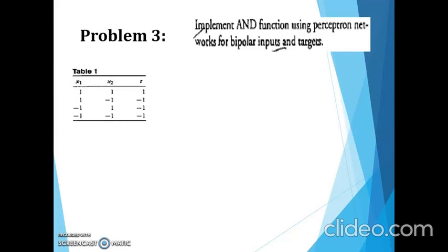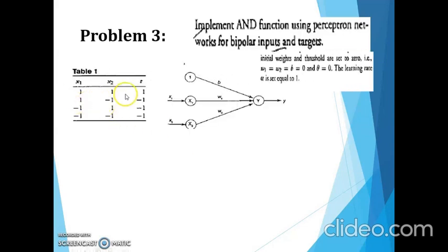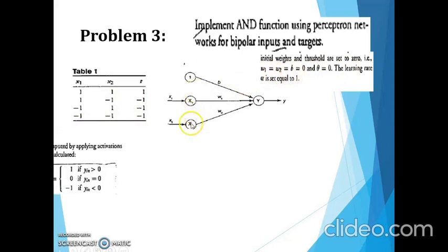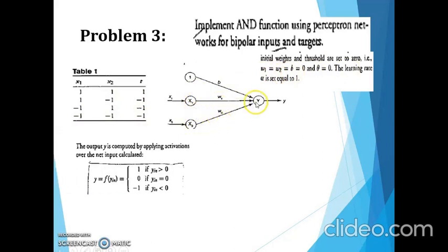Now we see the AND gate implementation using the perceptron neural network for bipolar input. AND truth table (bipolar): 1·1=1, 1·(-1)=-1 → output 0? Actually the bipolar AND outputs are: (1,1)→1, (1,-1)→-1, (-1,1)→-1, (-1,-1)→-1. Initial weights for the perceptron: w1=0, w2=0, bias=0. Only two inputs x1 and x2, with output y. Theta = 0. The activation function: greater than threshold → 1, equal → 0, less than threshold → -1.